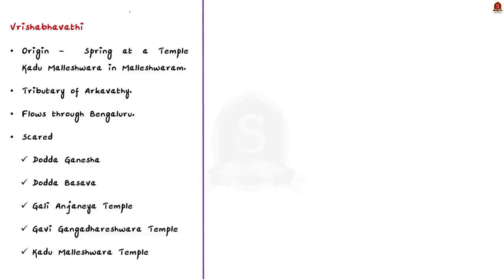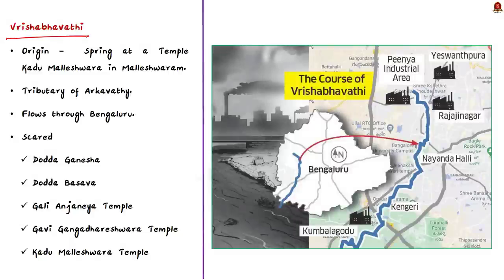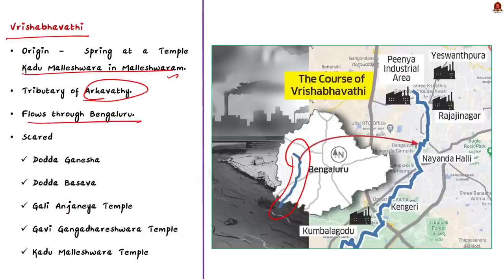Moving on to the next river, Vrishabavadi. This river originates from a spring at the Kadu Maleshwara temple in Maleshwaram. It is a tributary of the Arkavadi River and flows through Bengaluru. This river is considered sacred, resulting in many temples being located on its banks, including the Gali Anjaneya temple, Gavi Gangadhareshwara temple and Kadu Maleshwara temple. This river is also currently ruined due to pollution.